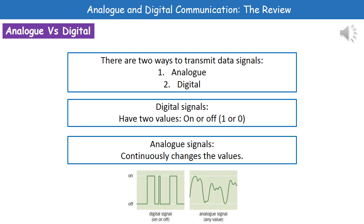A digital signal might also be referred to as being one or zero, the one meaning on, zero meaning off. The other type are the analog signals, and these continuously change their values. The diagrams at the bottom show you the pictures you'd see with an analog and a digital signal.